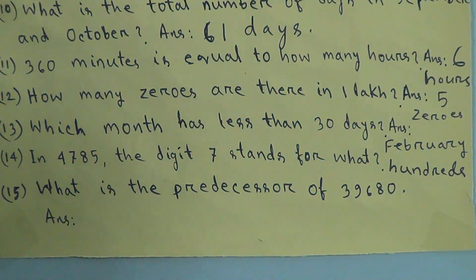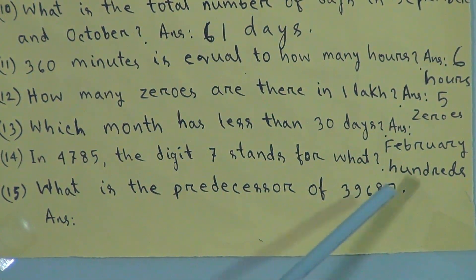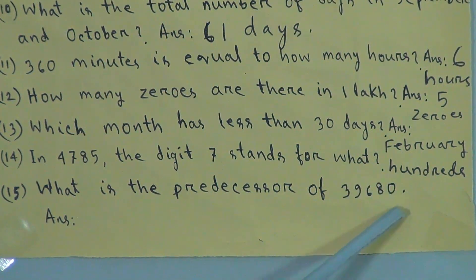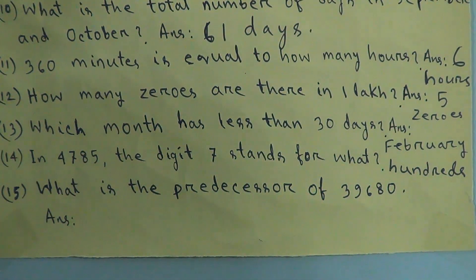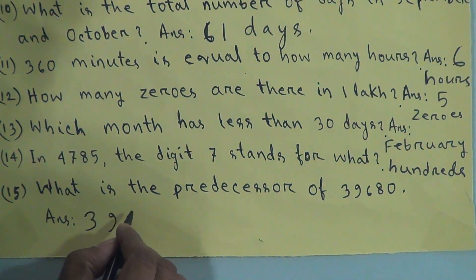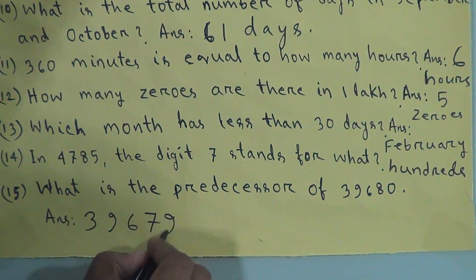Question 15: what is the predecessor of 39680? The previous number of 39680 is 39679, just as the previous number of 80 is 79. The answer is 39679.